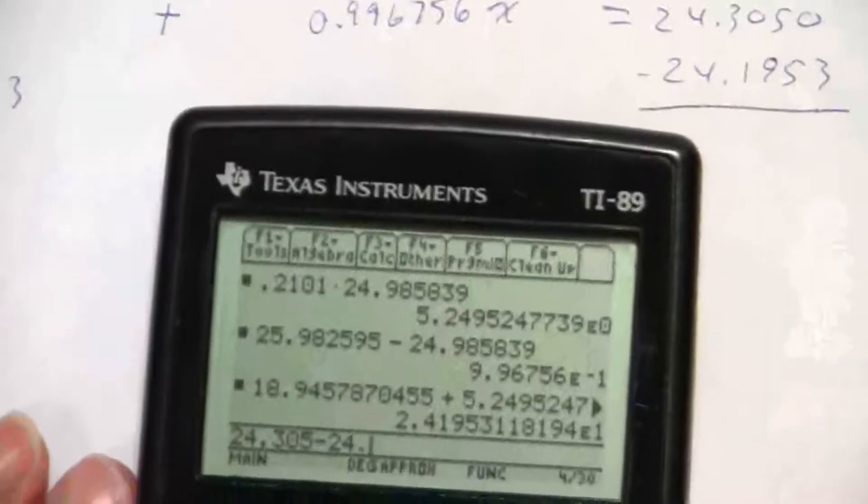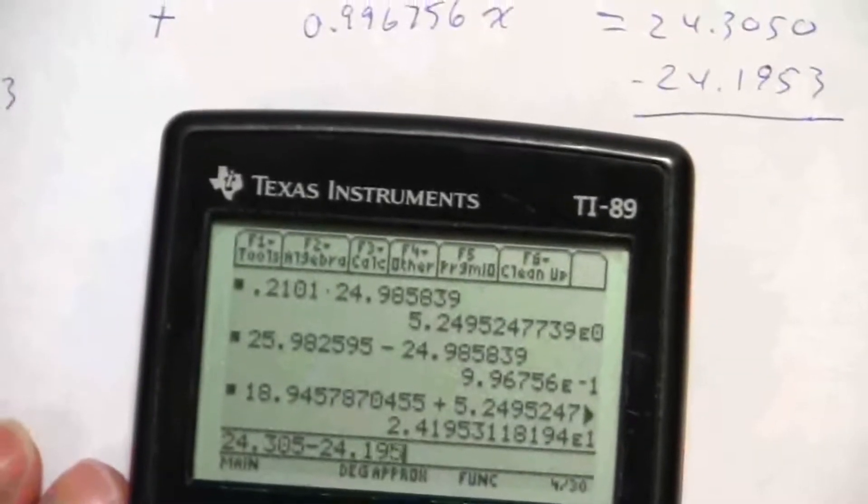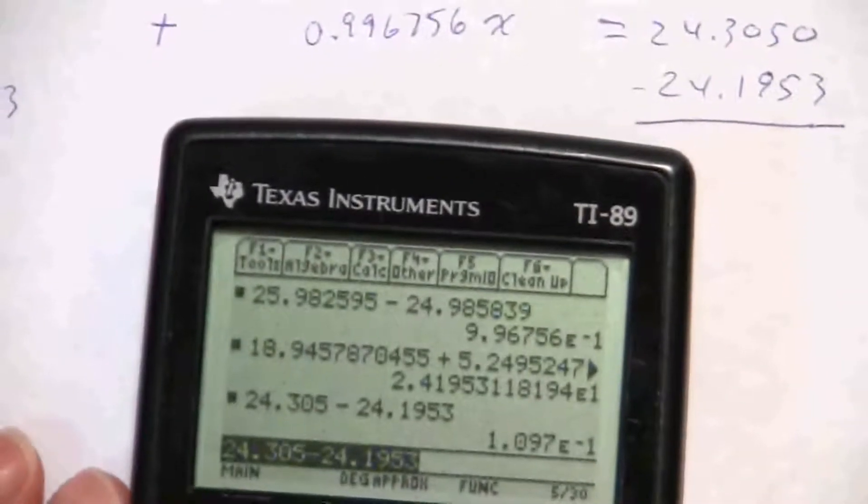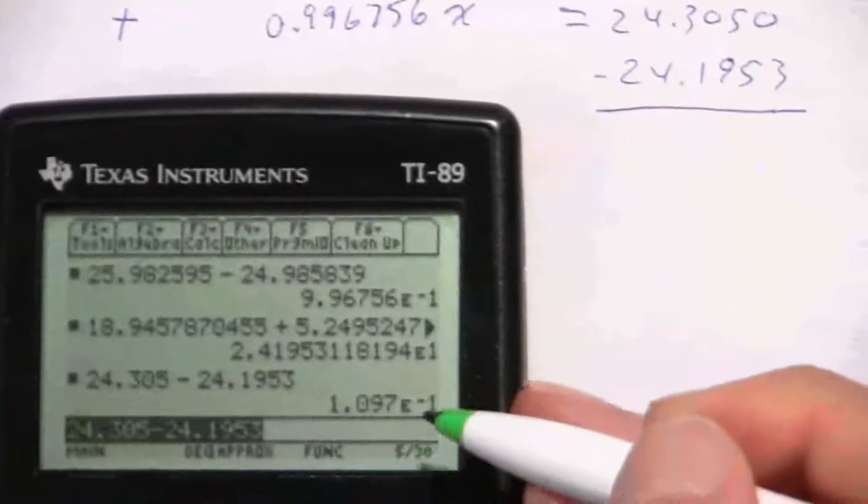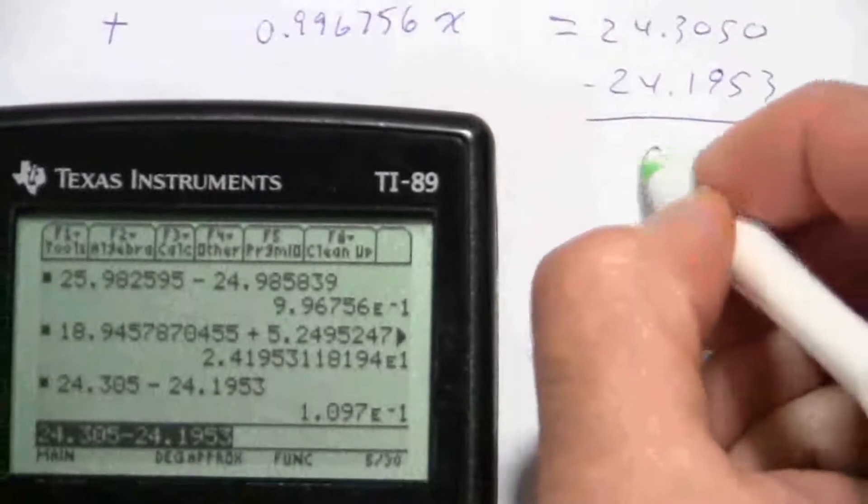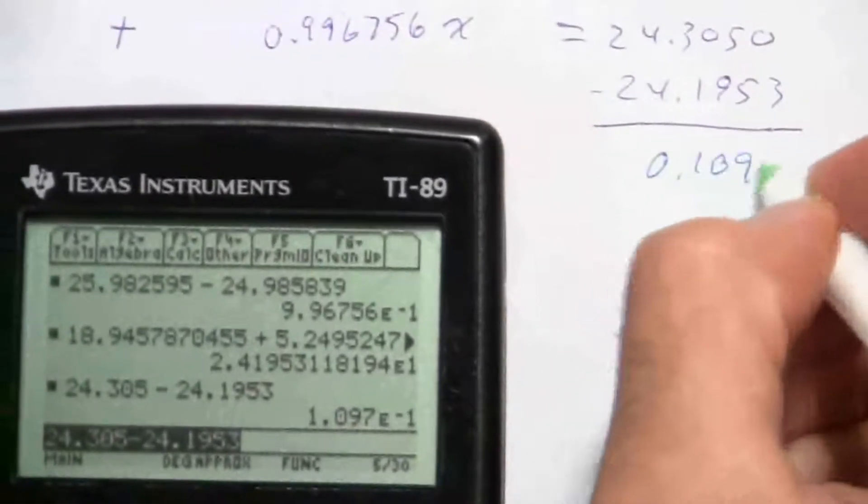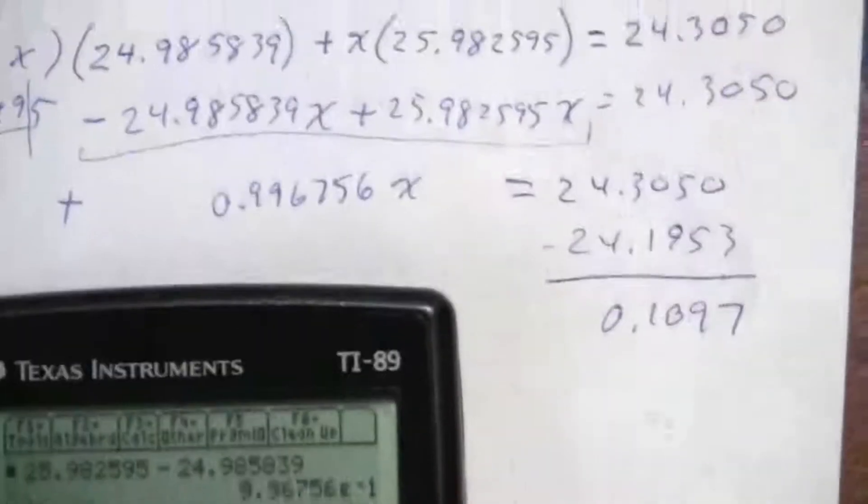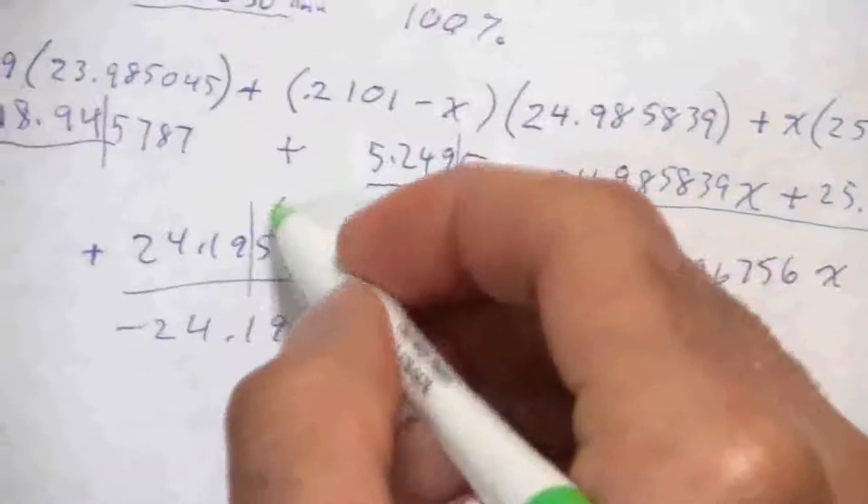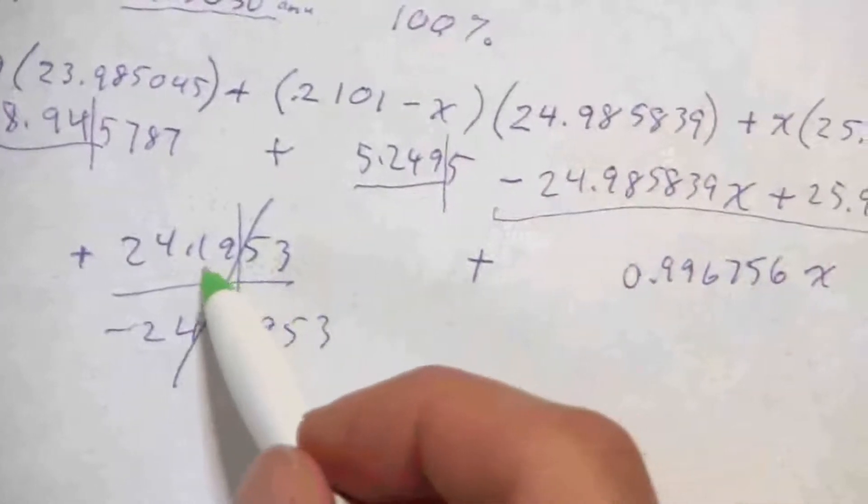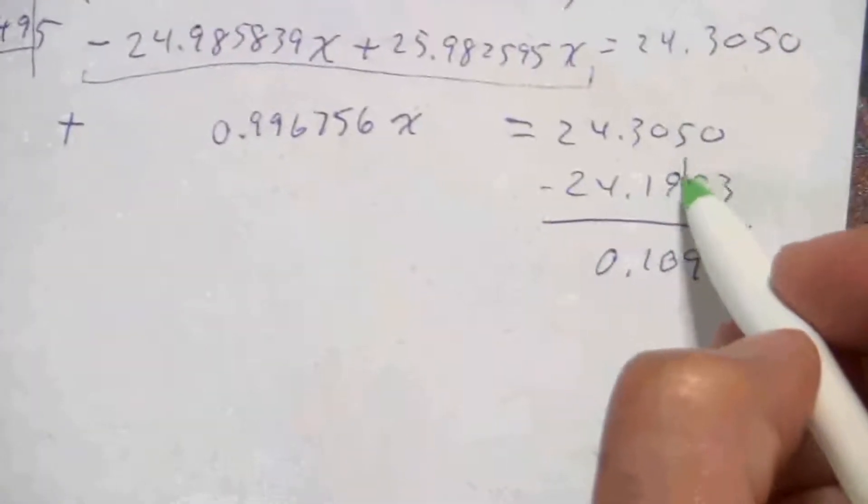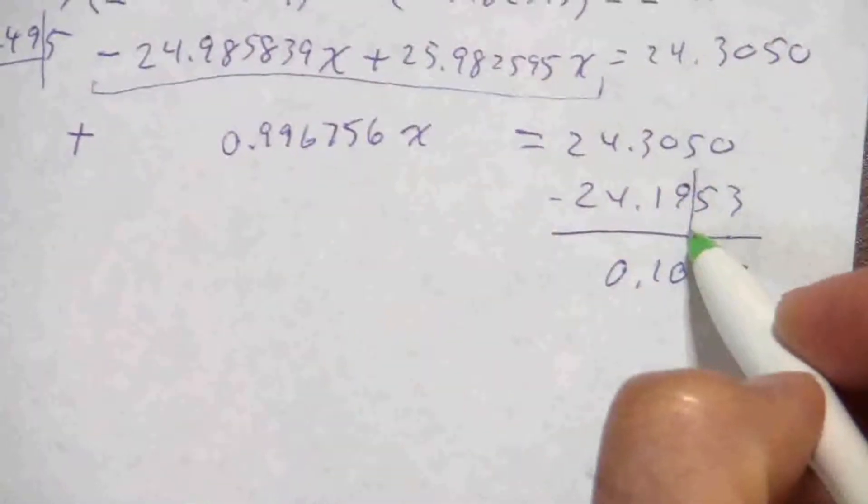So what I end up with here is I have 24.3050, and that's minus 24.1953, and I get times 10 to the negative 1, so that's 0.1097. Okay, so this part has dropped out. And let's not forget my significant figures—two decimal places. I'm subtracting again, so here I was subtracting that with two decimal places, so I'm going to carry out two decimal places in my result.